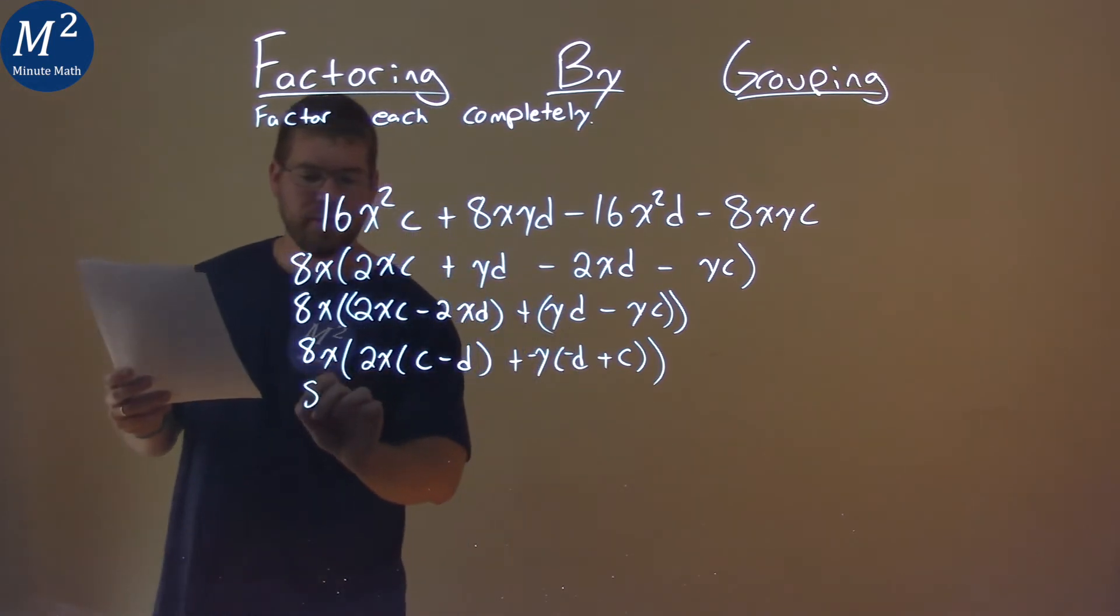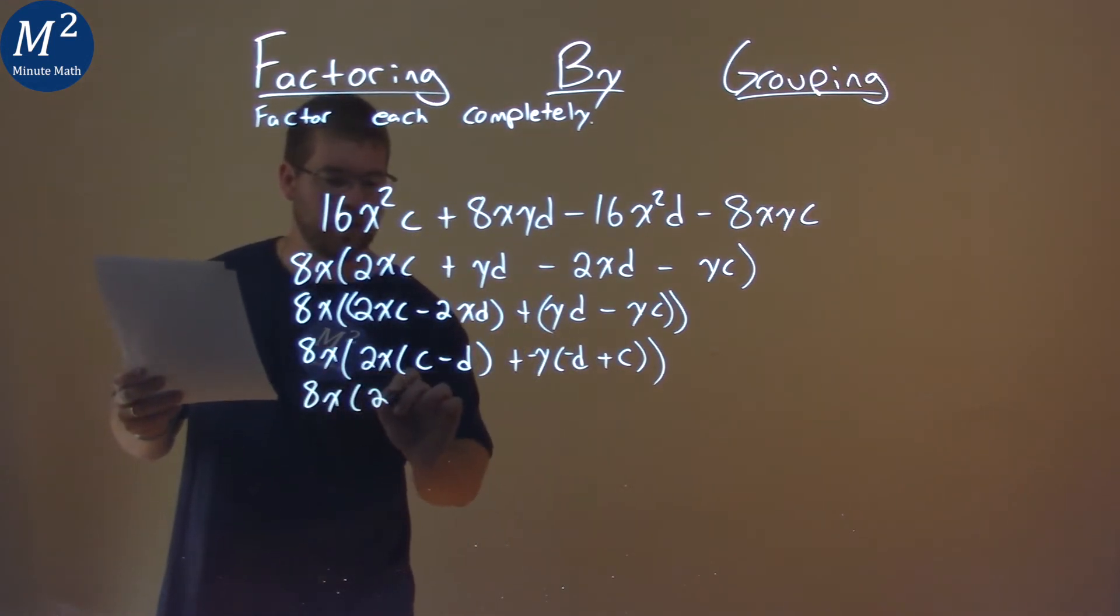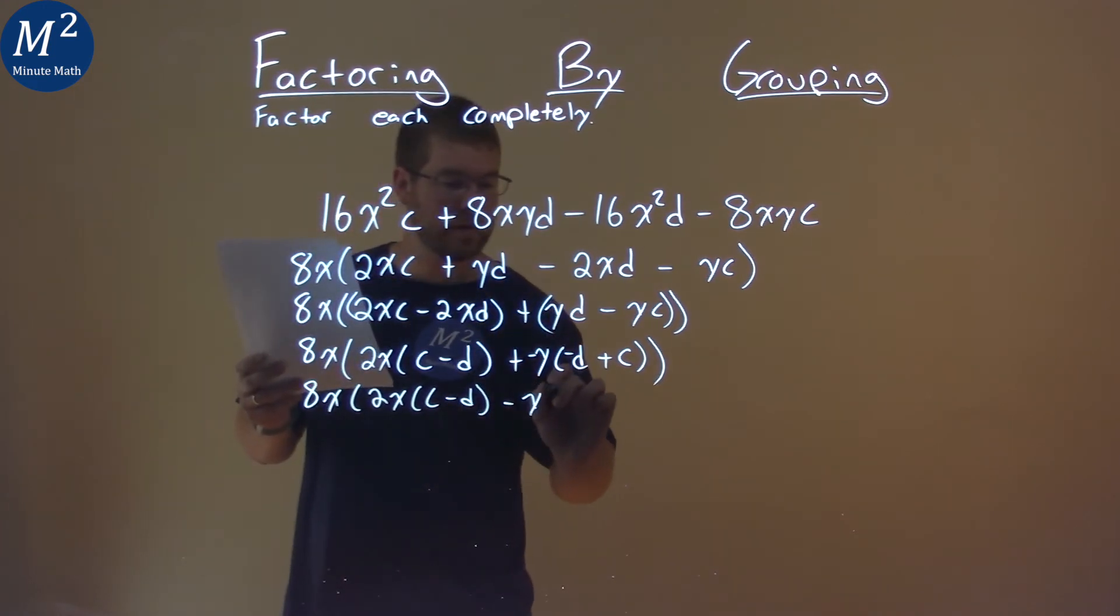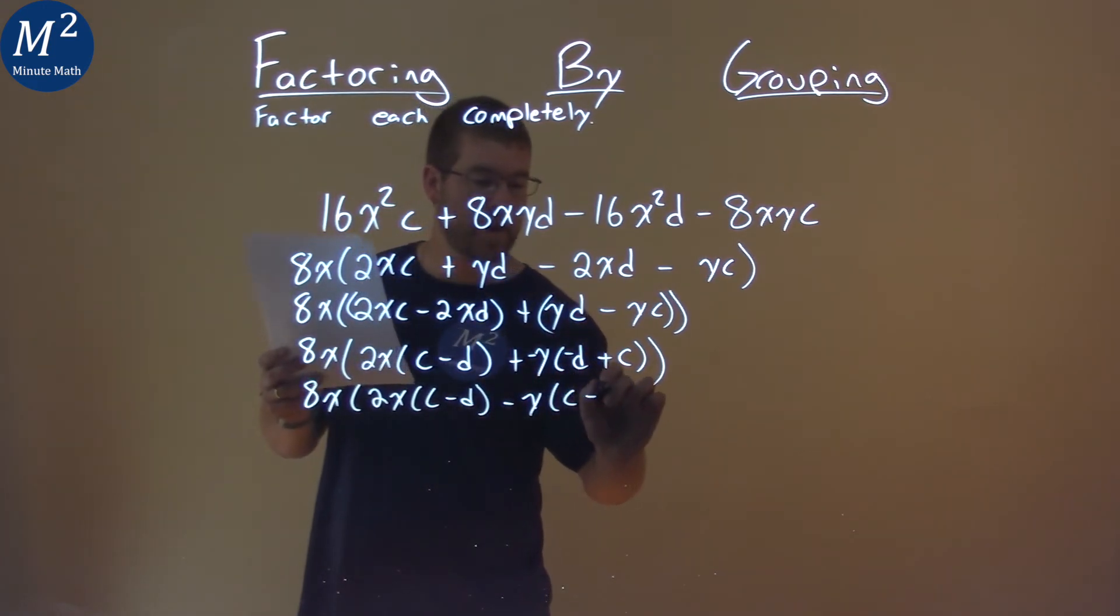So let's rewrite that: 8x times 2x times (c - d) minus y times, rearrange, c - d here. Now it's a little easier.